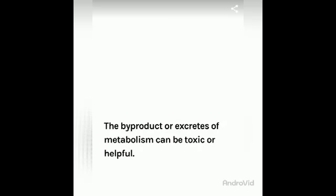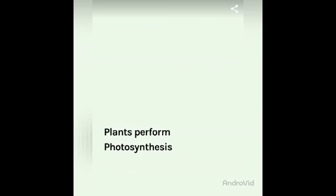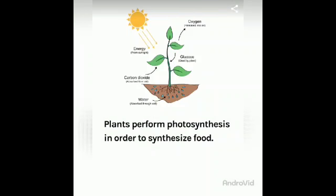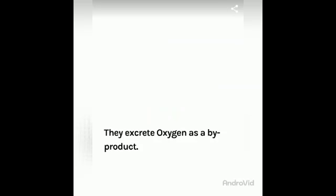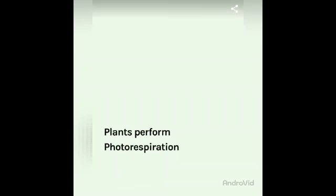The byproducts or excretions of metabolism can be toxic or helpful. Plants perform photosynthesis in order to synthesize food. They take in carbon dioxide, sunlight, water, and chlorophyll, and they excrete oxygen as a byproduct.